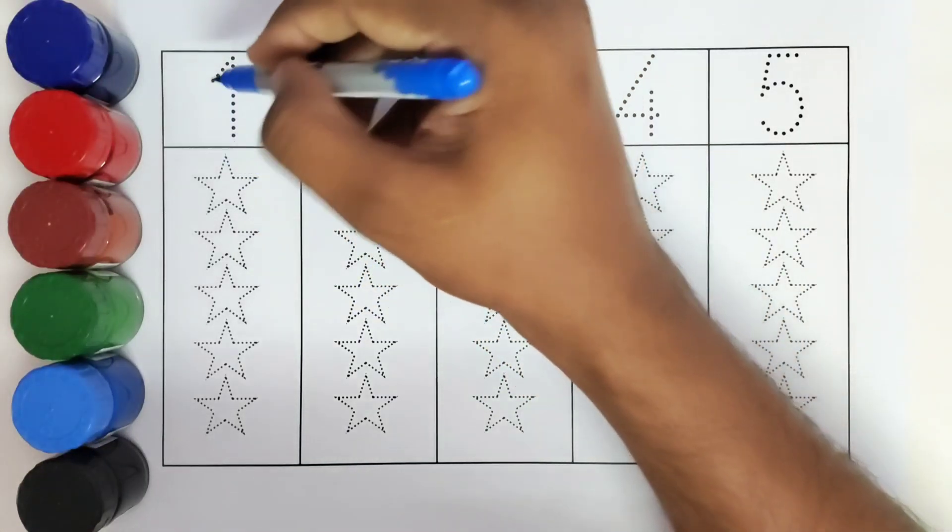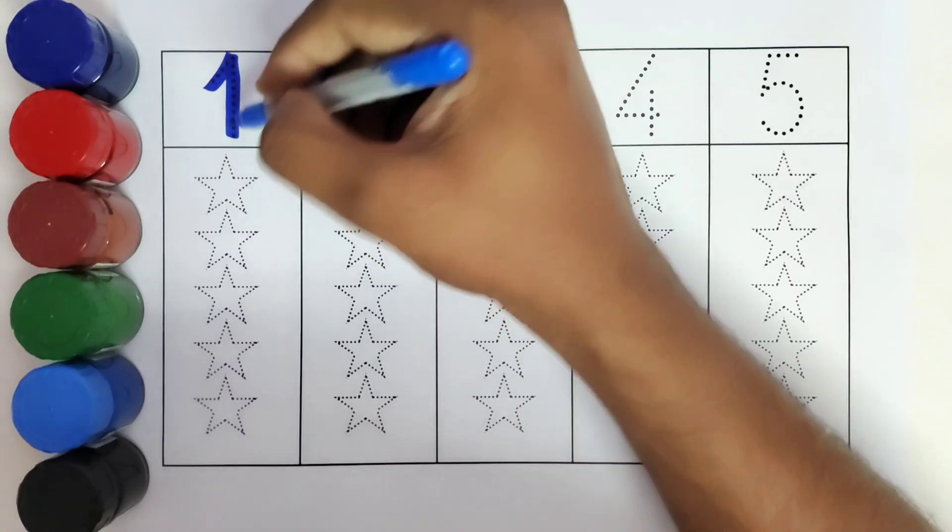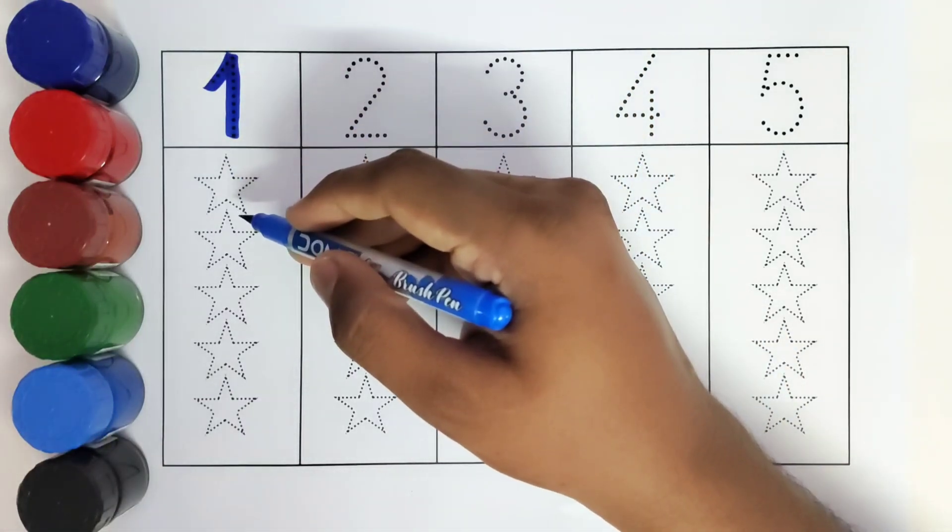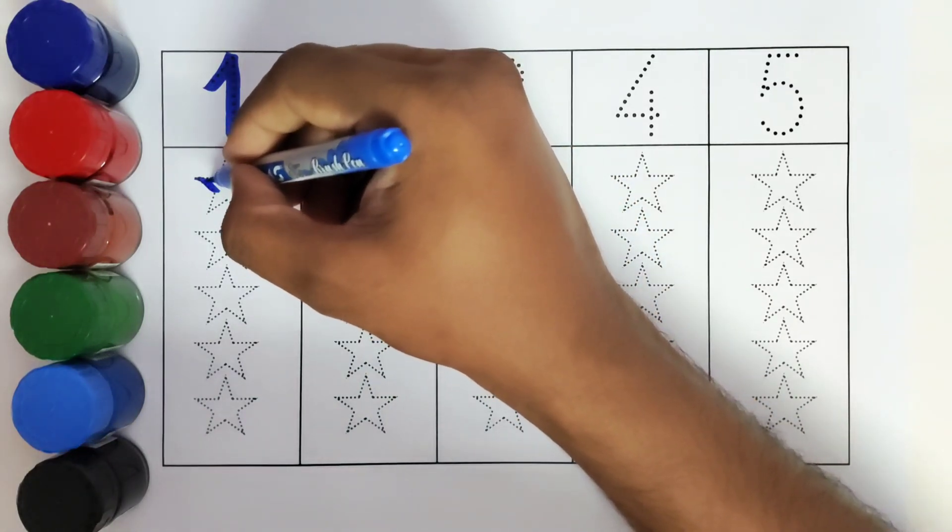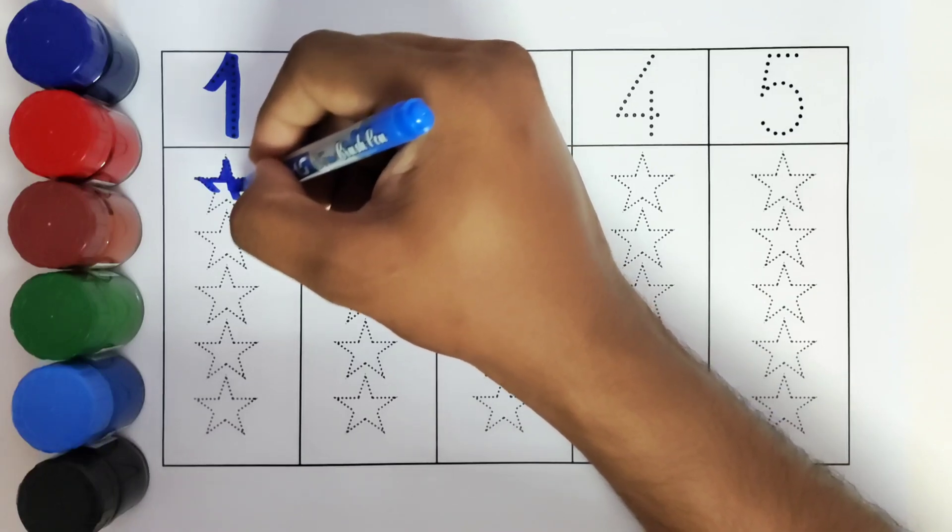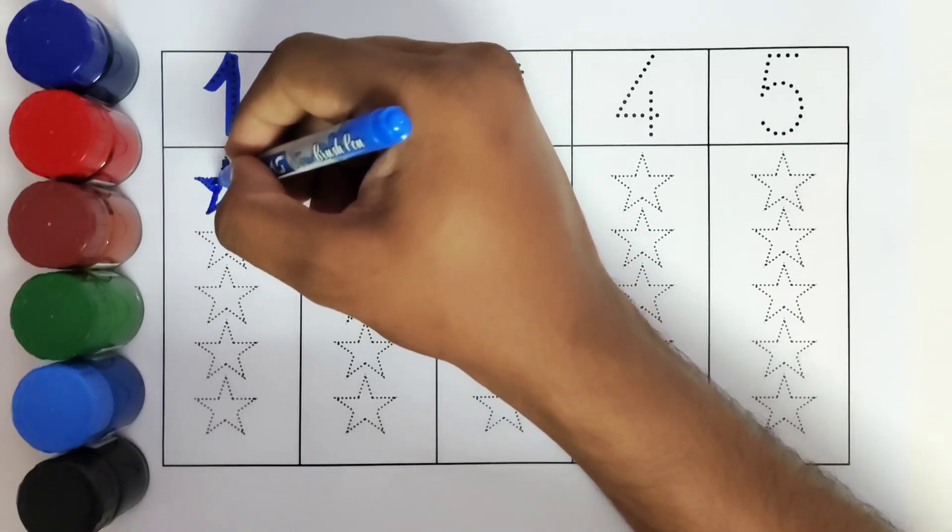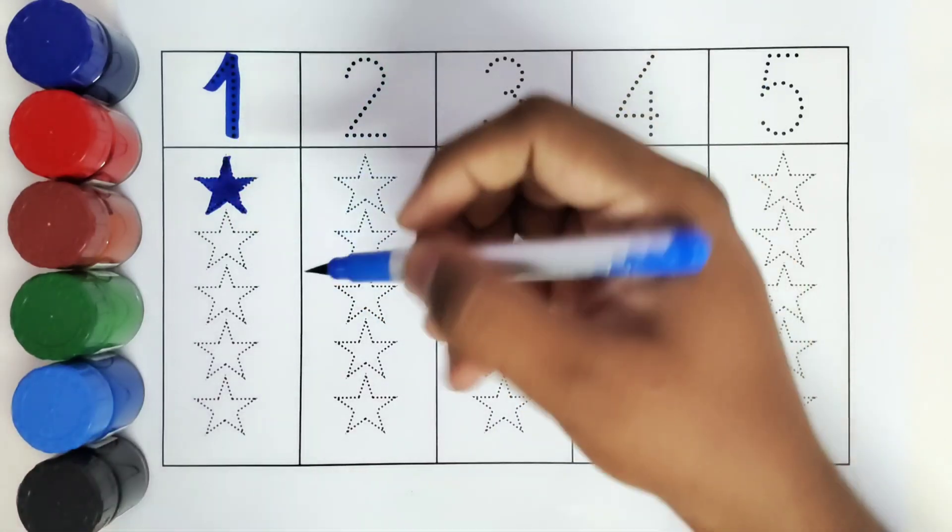This is 1. How many stars do we have to color? One star. We will color the first star with dark blue color. One star.